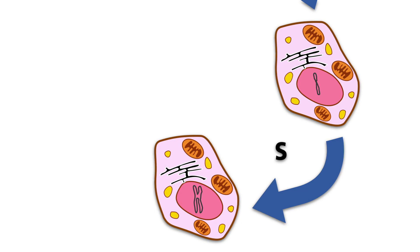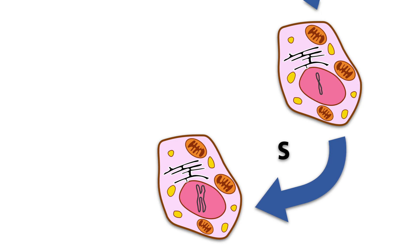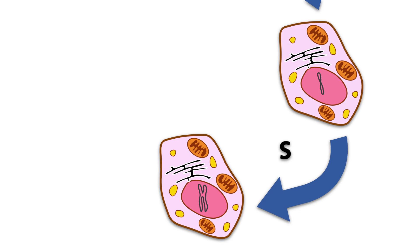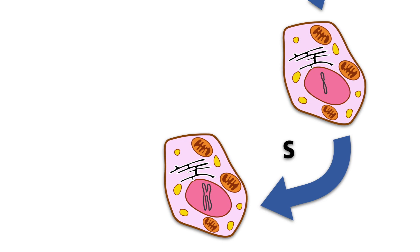After the S-phase, the nucleus includes two genomes, that is, four copies of each gene. After replication, each of the doubled chromosomes consists of two chromatids held together at the centromere.